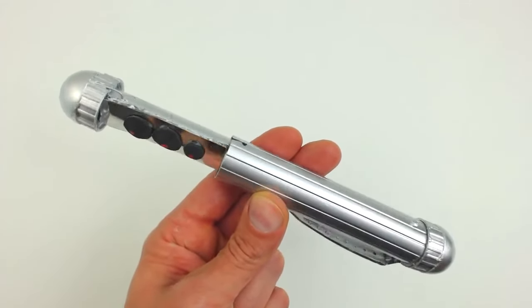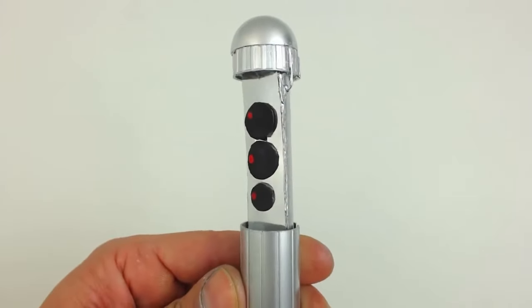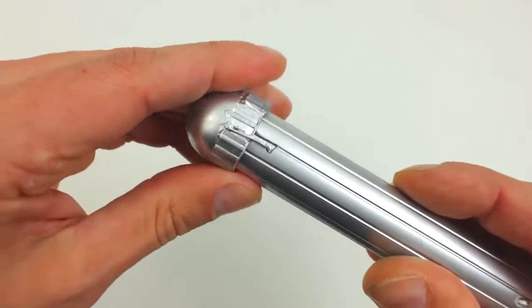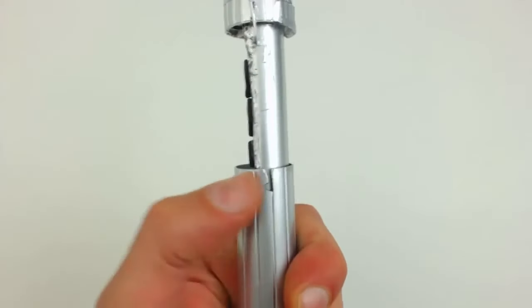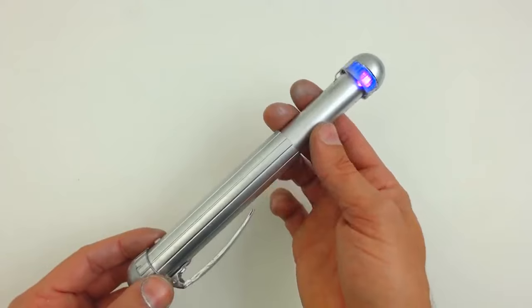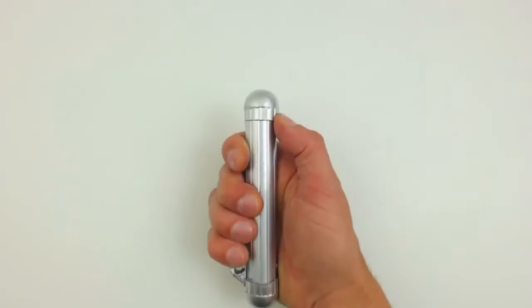We are ready to try it out. We just have to press it down to close it, and then open it again by pushing it this way. Make yourself a neuralyzer with recycled materials. Now you just have to put on your men in black suit and sunglasses and get ready to erase memories.